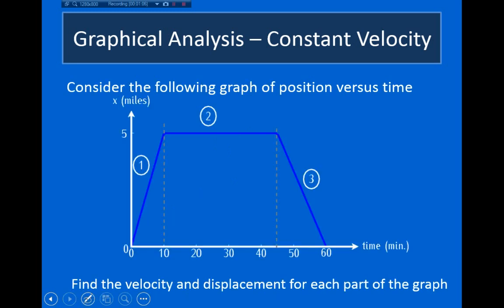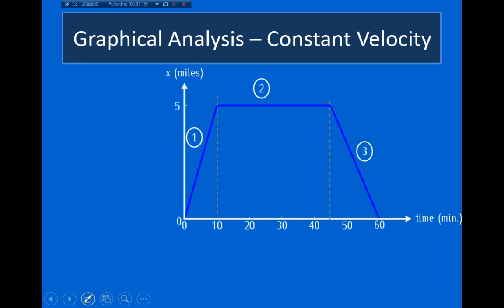Let's look at a simple example. Here I'm giving you the position versus time for some object, and I ask you to calculate the velocity and displacement for each one of these three segments. For the first segment, my change in position: you can see I start out at zero and end up at five miles. So my change in position was five miles. Velocity is delta x over delta t, which is going to be five miles divided by delta t of 10 minutes.